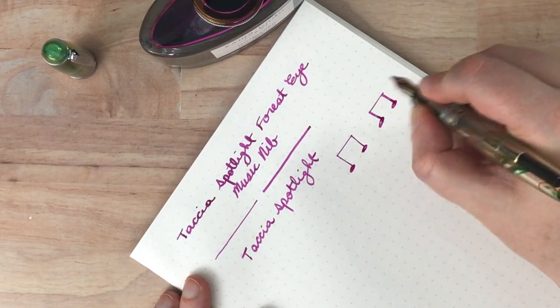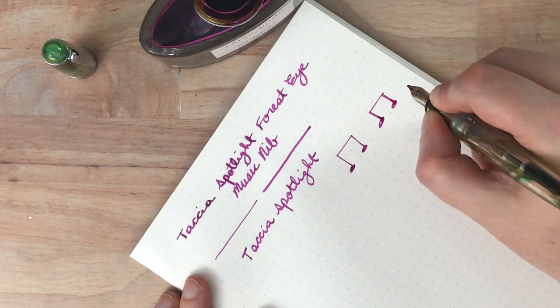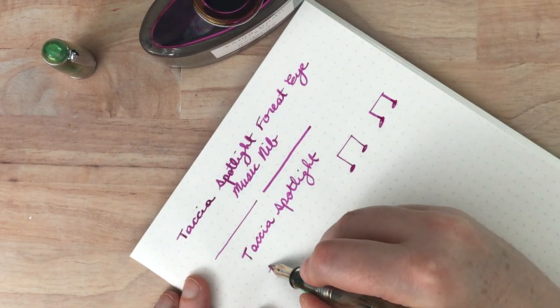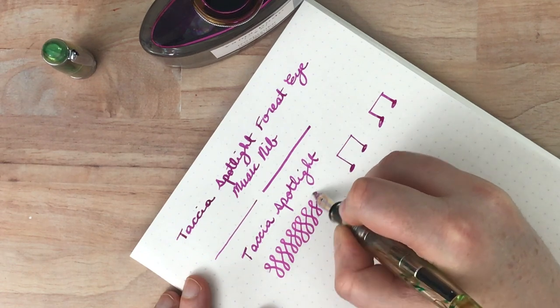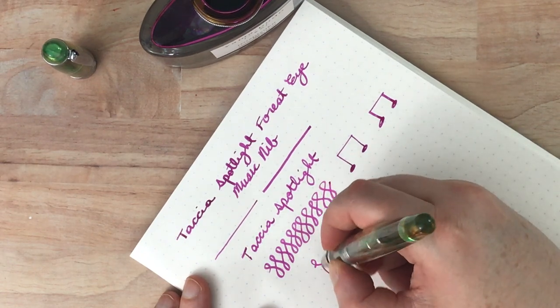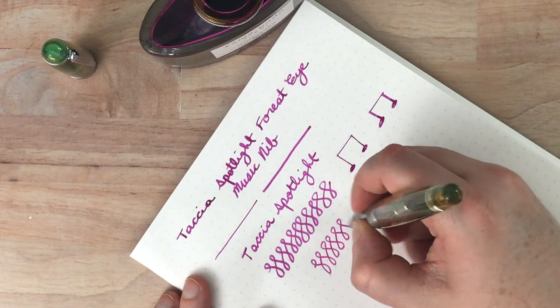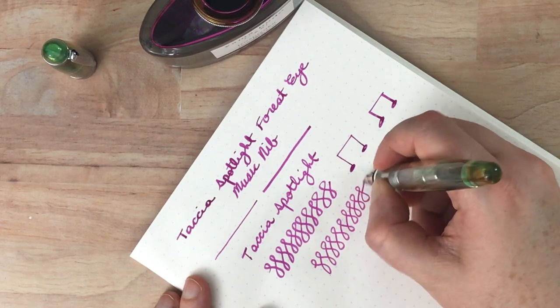Yeah. So I suppose if you're writing with it naturally, that's the kind of thing you're going to end up with. And let's see. So when I do loops this way, there's not really much variation. But if I hold it like this and do the loops, there's a little bit more line variation.